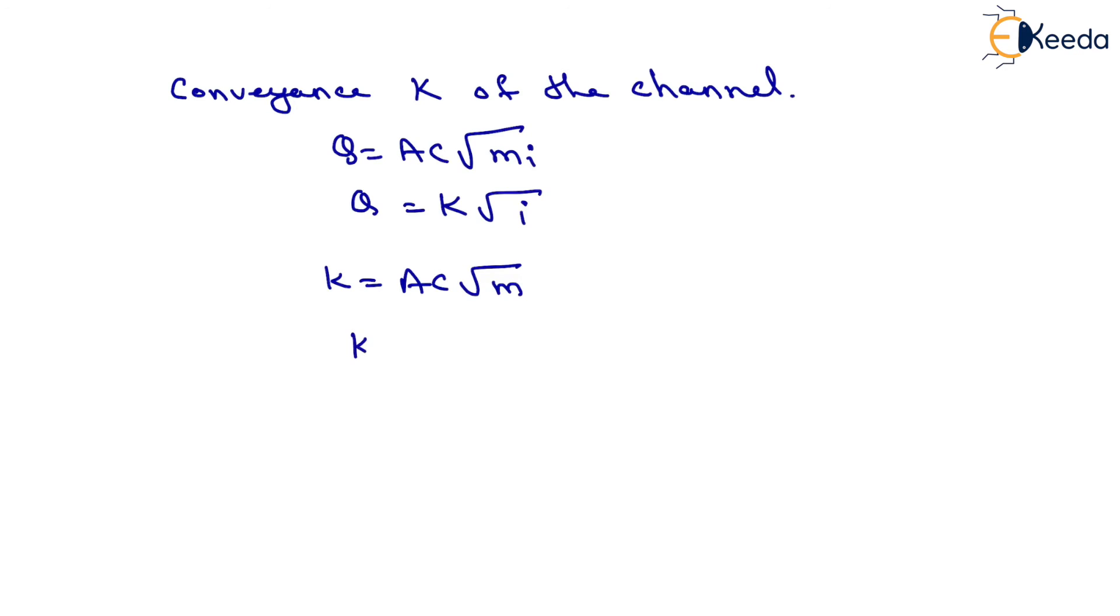So K equals 0.18 times 56 times square root of 0.15. On solving, we get K equals 3.9039 meter cube per second. That is the value of K.